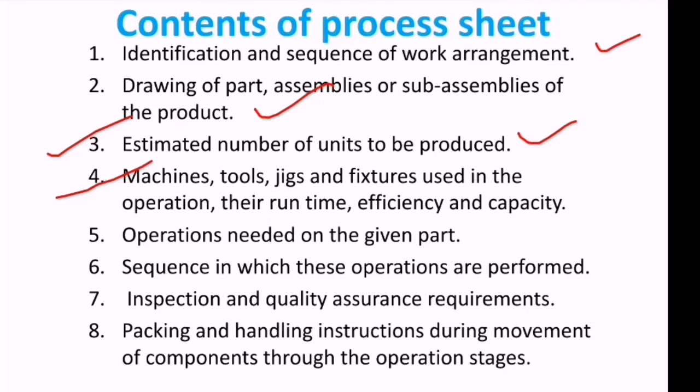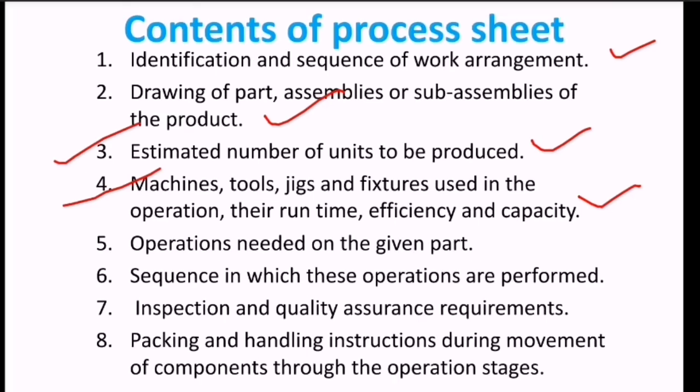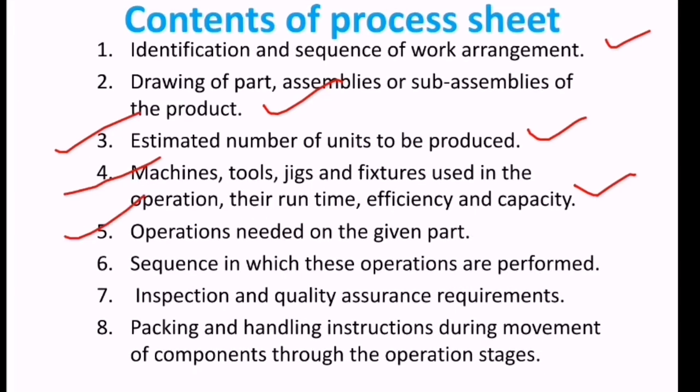Fourth, machines, tools, jigs, and fixtures used in the operation, including their run time, efficiency, and capacity. We should form a table showing machines, tools, jigs, and fixtures required, along with running time, start time, and end time. Fifth, operations needed on the given part.